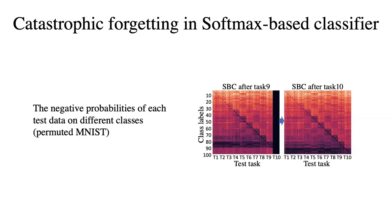As we can see, the model using the softmax-based classifier shows that the lowest negative probability happens between 80 to 90. This occurs for all data from different tasks, even when their ground-truth labels are not 80 to 90. After training on task 10, the lowest negative probability shifts to 90 to 100. This means the softmax-based classifier has already forgotten previously learned tasks and only predicts classes in the current training task.